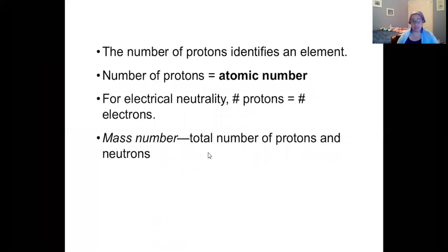The number of protons identifies the element. Think of it like a unique fingerprint that makes you different from all other people. The number of protons identifies each element similar to a fingerprint. If it's six, it's always going to be considered carbon. If it's eight, it will always be considered oxygen. The number of protons is called its atomic number. And for that neutrality, so that it comes out to zero, the number of protons is going to equal the number of electrons.